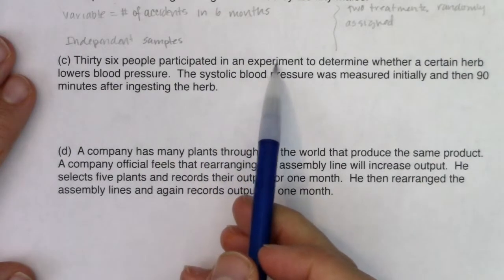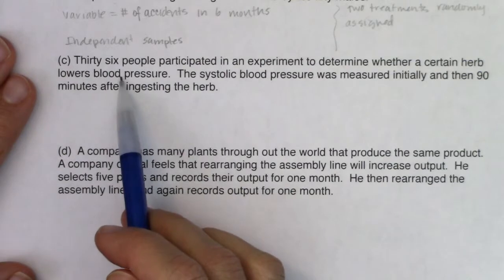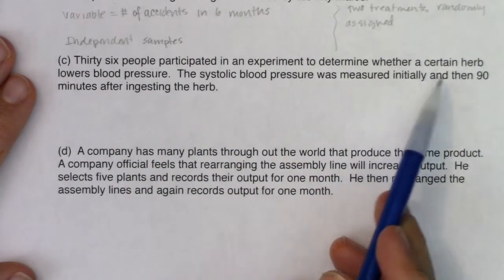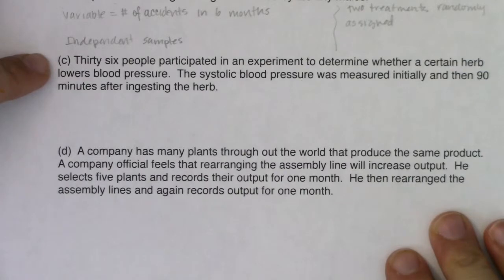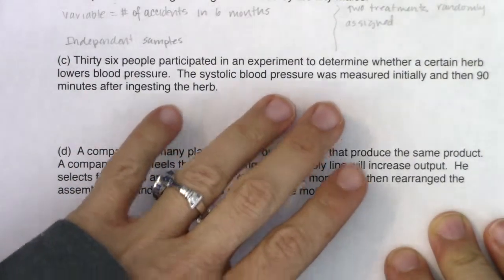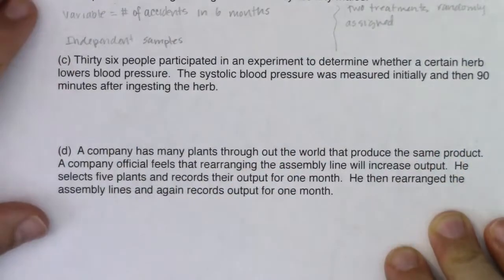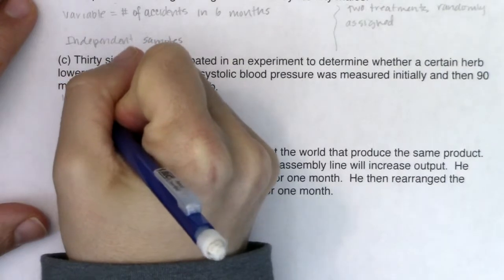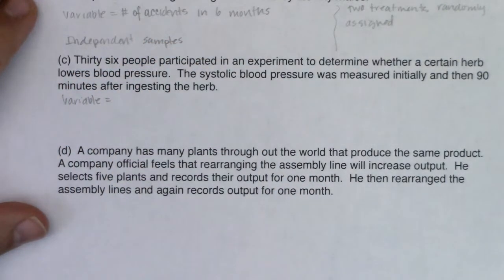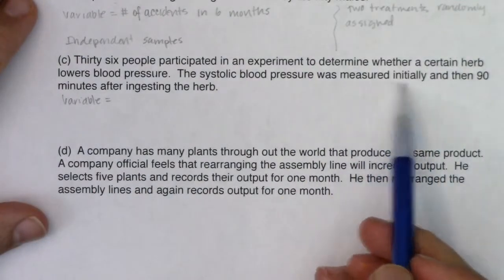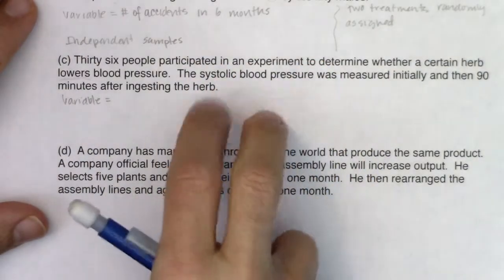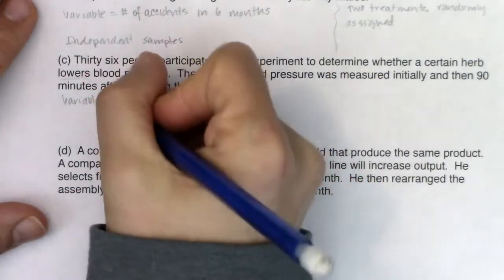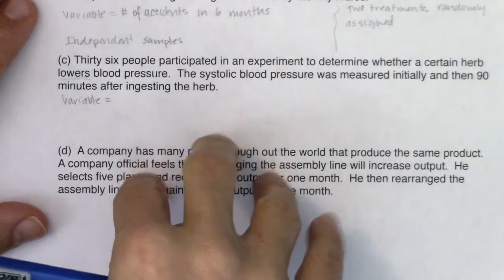Setup C: 36 people participated in an experiment to determine whether a certain herb lowers blood pressure. Systolic blood pressure was measured initially and then 90 minutes after ingesting the herb. My variable here isn't just blood pressure — what I'm really interested in is the change in blood pressure. They take two measurements and subtract to see if blood pressure was lower. So the variable is the difference in systolic blood pressure.